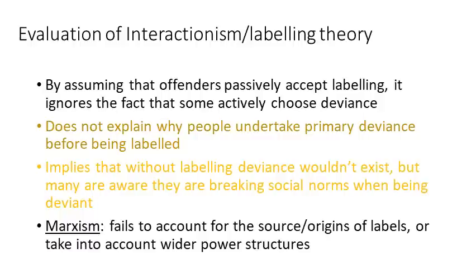By assuming that offenders passively accept labelling, it ignores the fact that some actively choose deviance — so again, we need to think about the role of free will. It does not explain why people undertake primary deviance before being labelled in the first place: if we know it's wrong, why do we do it? It implies that without labelling, deviance wouldn't exist, but many are aware that they are breaking social norms when being deviant. We can bring in functionalism here and say that crime and deviance has been present in every single human society and civilisation throughout history — perhaps it's normal, natural, and inevitable. Marxists would argue that interactionists fail to account for the source or origin of labels or wider power structures — the question being who gets to label, and Marxists would argue it's the bourgeoisie who control the state.